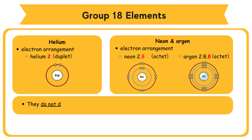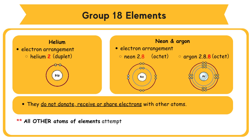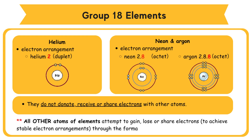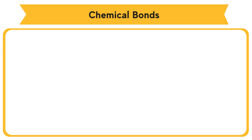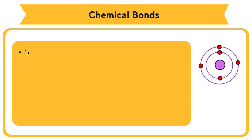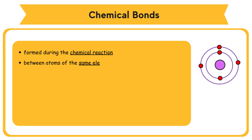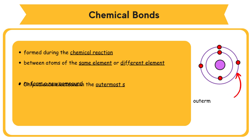Inert gas atoms do not donate, receive, or share electrons with other atoms. All other atoms of elements attempt to gain, lose, or share electrons to achieve stable electron arrangements through the formation of chemical bonds. Chemical bonds are formed during chemical reactions between atoms of the same element or different elements in order to form a new compound. Only valence electrons in the outermost shell are involved in bond formation.